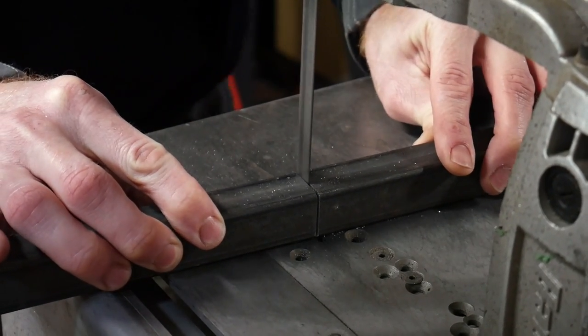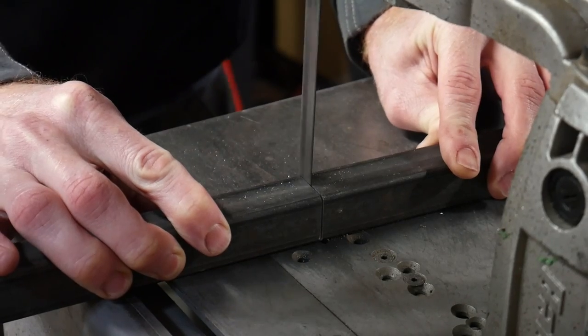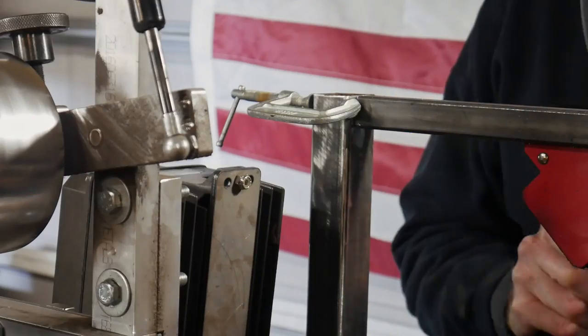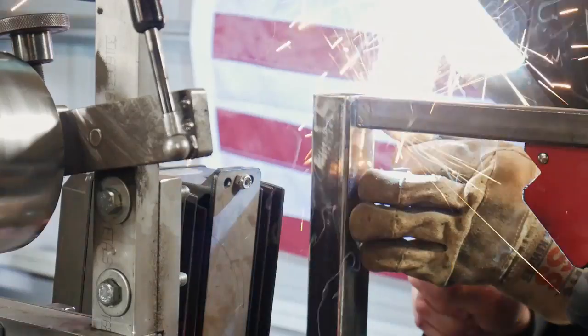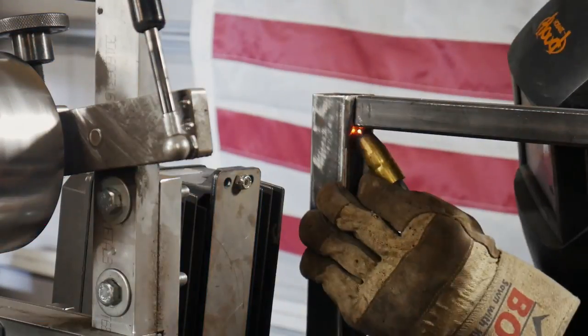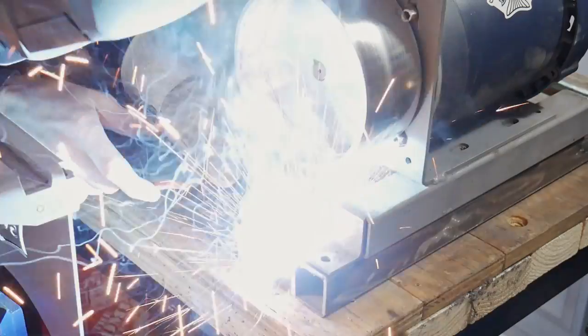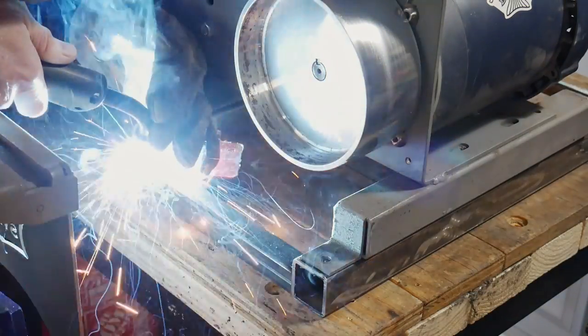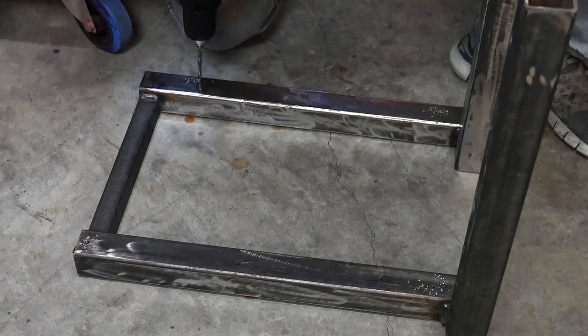To make this frame I'm using mostly one and a half by one and a half square tubing with an eighth of an inch wall thickness. On the cross members I use an inch by an inch square tubing. To tack this thing together I'm using my Hobart Handler in the MIG setting with some CO2 argon gas.